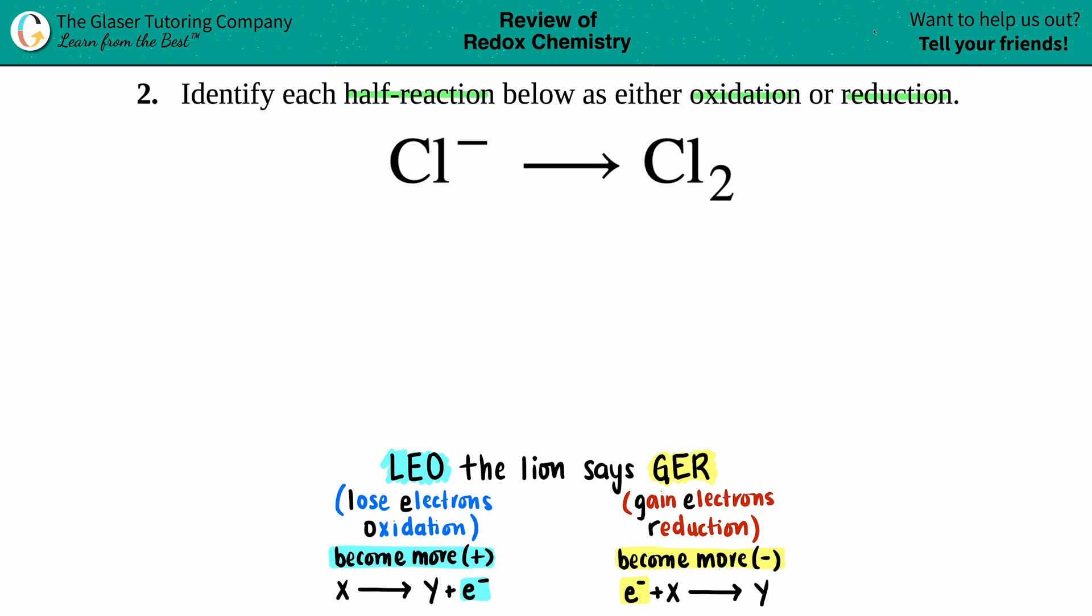Redox is the combination of reduction and oxidation equations. Whenever you're dealing with these topics in chemistry, we always think of the mnemonic LEO the lion says GER. LEO stands for lose electrons, that's always oxidation. So if you're losing electrons you're always going to be oxidized. By losing electrons you're always going to become more positive because electrons are negative.